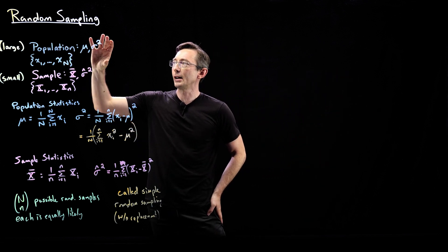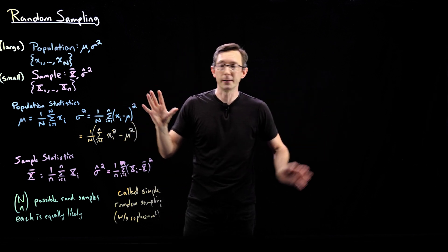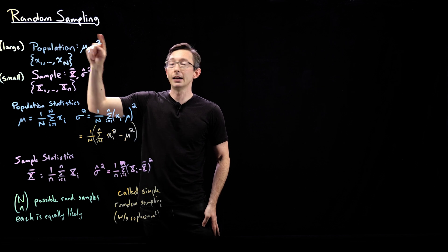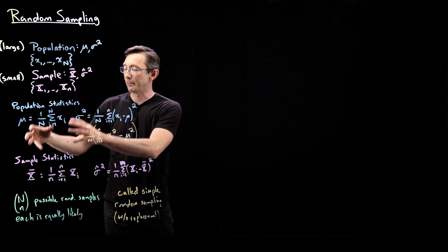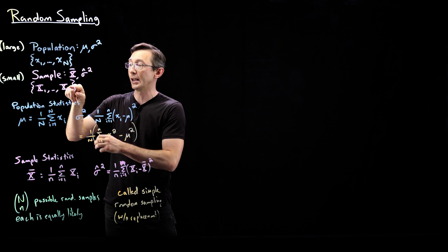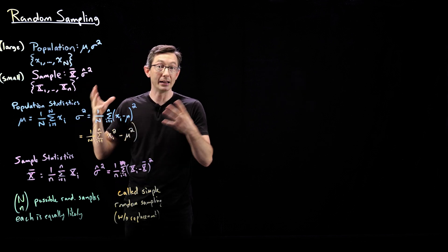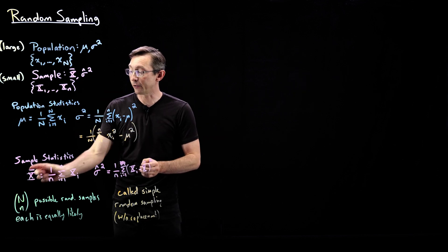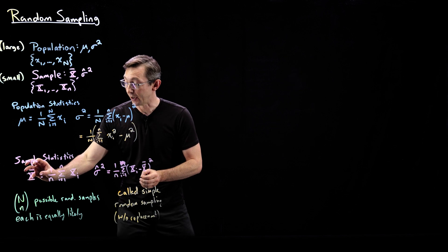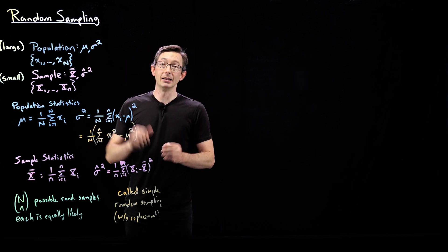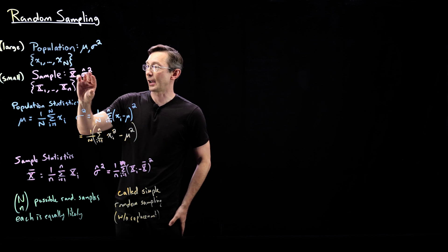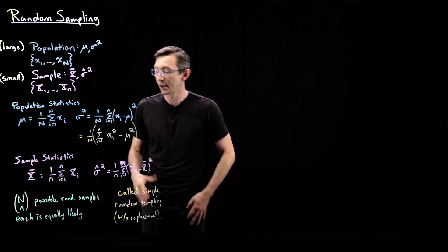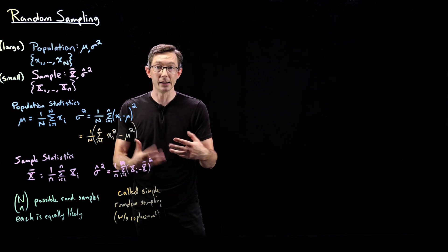We showed last time that you can have a large population whose PDF may or may not even be known, but it has a mean and a variance. If I take a subsample — a little-n subsample of that big-N population — those samples become random variables. The average of those random variables, X-bar, is hopefully an estimate of the population mean mu. We can also compute things like the sample variance and so on.